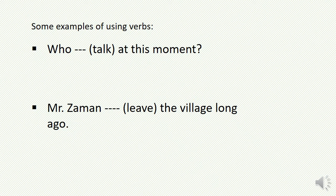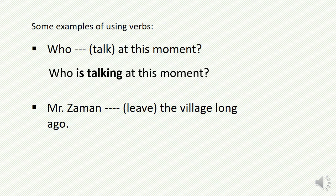Then: 'Who ___ talking at this moment?' Look at the term 'at this moment' — it indicates that it is present continuous tense. The structure of present continuous tense is be verb plus verb with -ing. So the correct answer is: 'Who is talking at this moment?' Here 'talk' becomes 'is talking.'